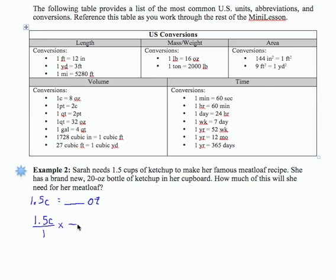And then we want to find a conversion that will place cups in the denominator and ounces in the numerator. If I look up here in my table, there's a relationship between cups and ounces. One cup is 8 ounces, so I'm going to put 8 ounces on top, one cup in the bottom.